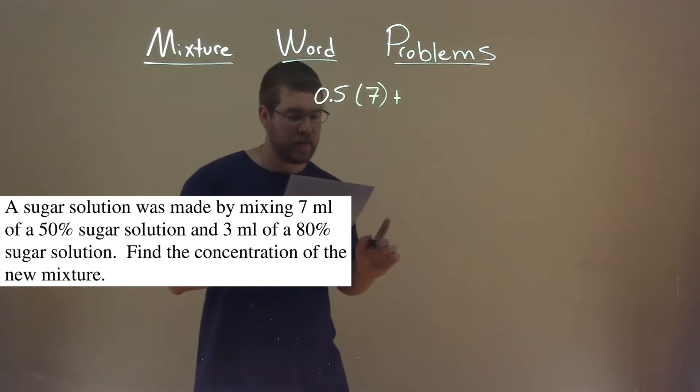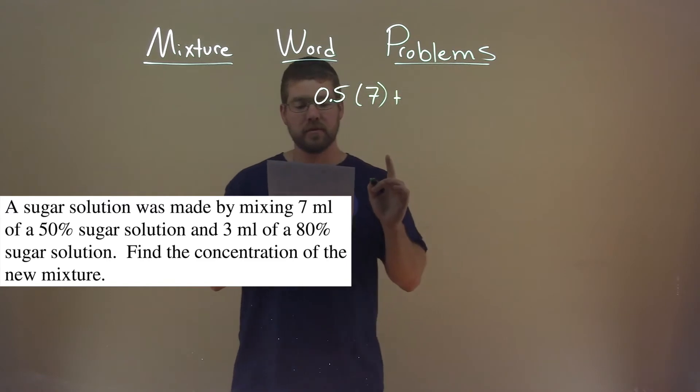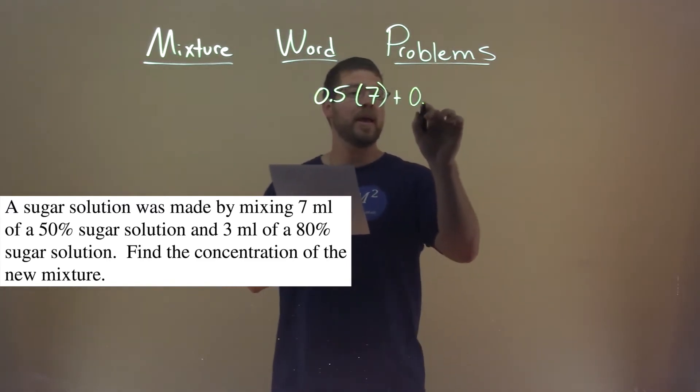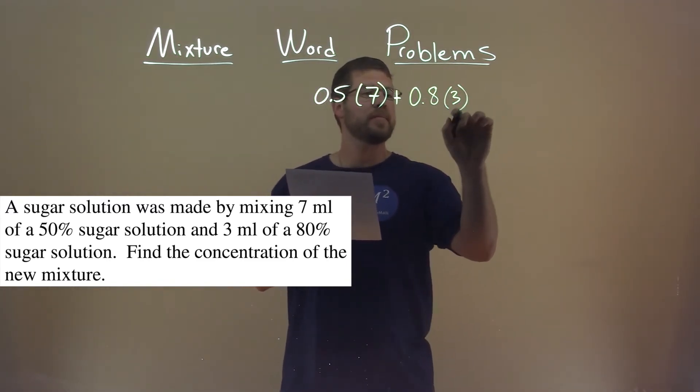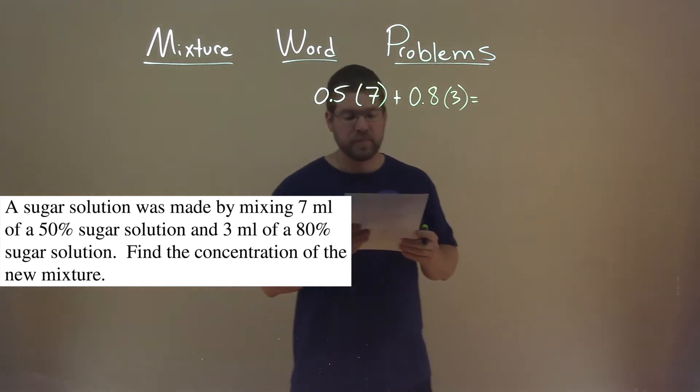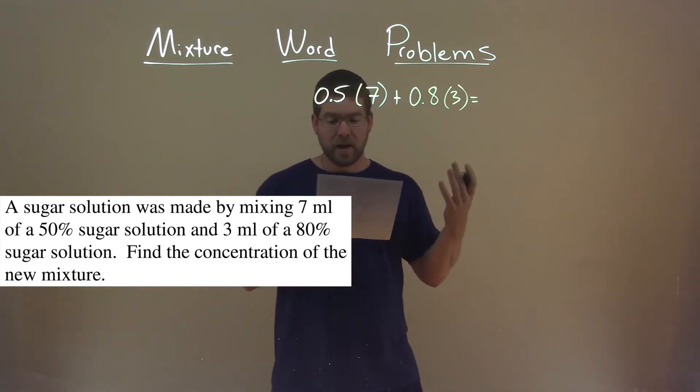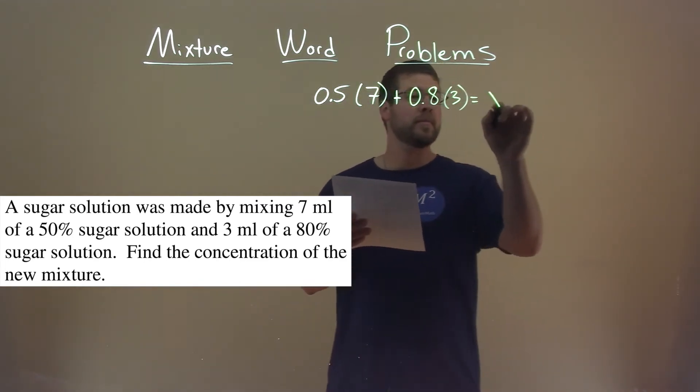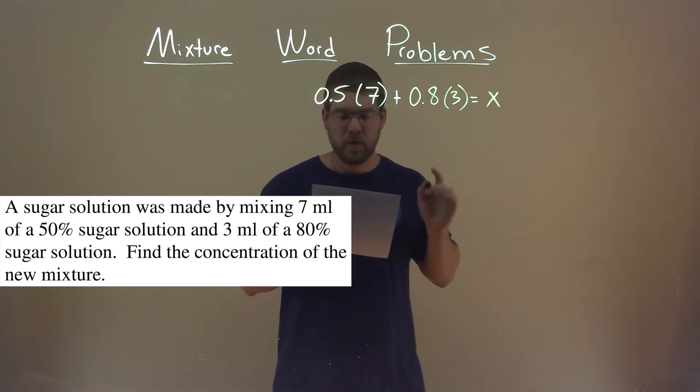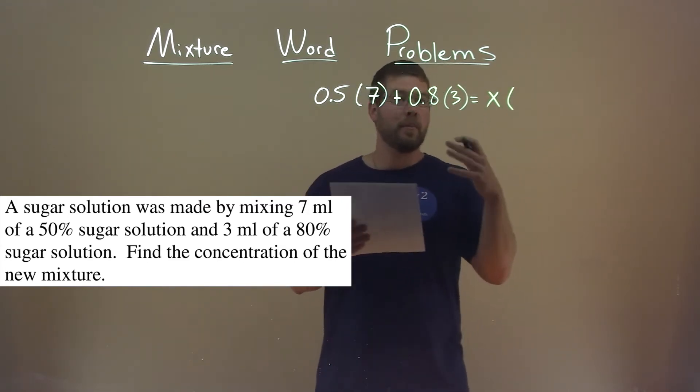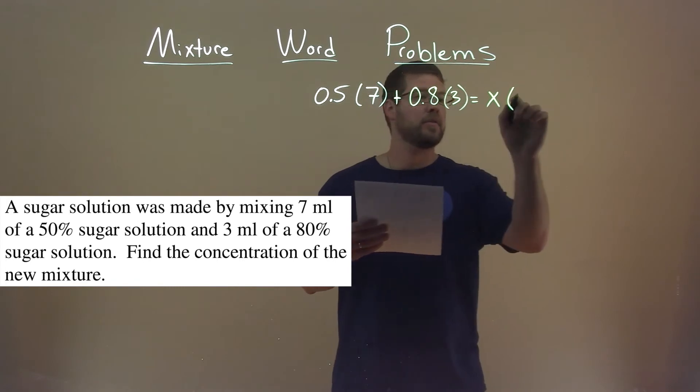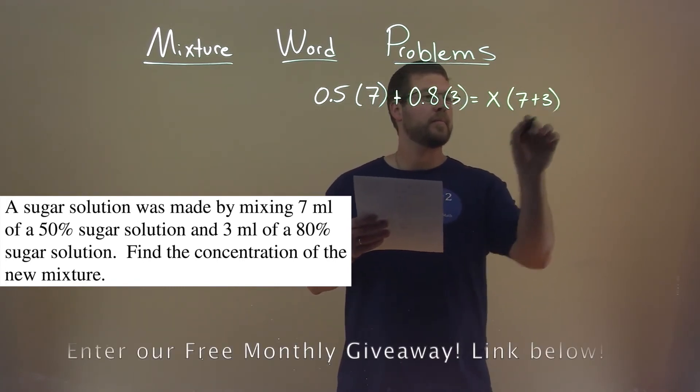We're combining that with a 3 milliliter solution at 80%, so 0.8 times 3, and what should that equal? Well, that equals the concentration of the new mixture, which we don't know, times the total amount of liquid, 7 plus the 3 here, milliliters.